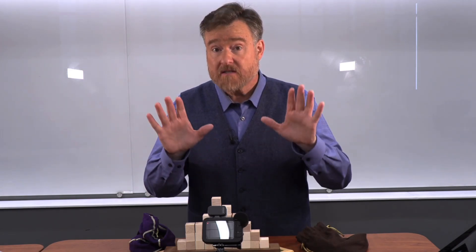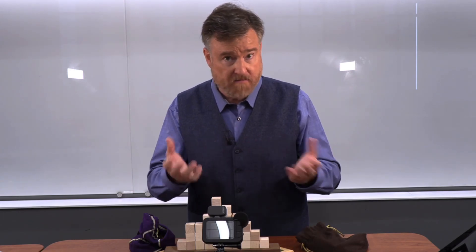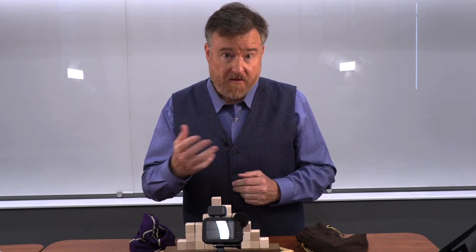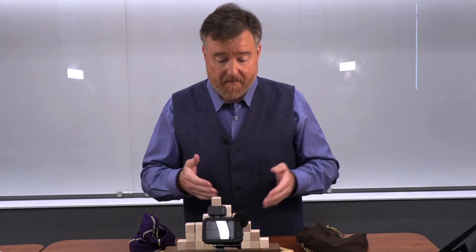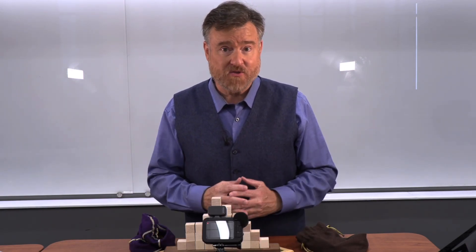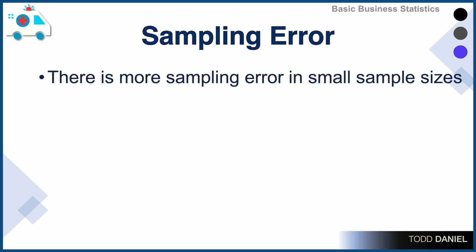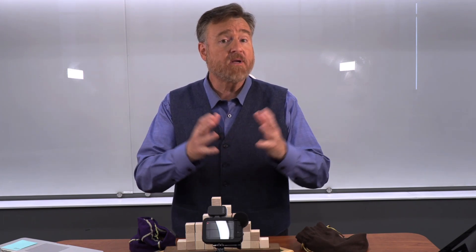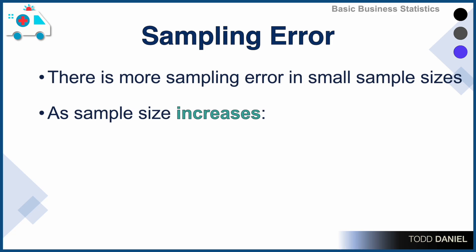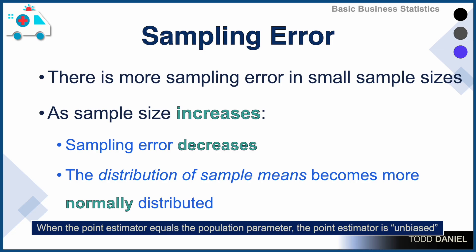Out of a population of 4,000, how many samples of size 30 could we calculate? We'd have to use permutations and combinations in Excel to find out — it would be an enormous number. So we're talking about a massive distribution of sample means, not a small one. We chose a sample size of 30 for this illustration, but we could choose 100, 500, or 1,000. There is more sampling error in small sample sizes — the point estimator from a smaller sample is not as informative as from a larger sample, because as sample size increases, sampling error decreases. Along with that, the distribution of sample means becomes more normally distributed.